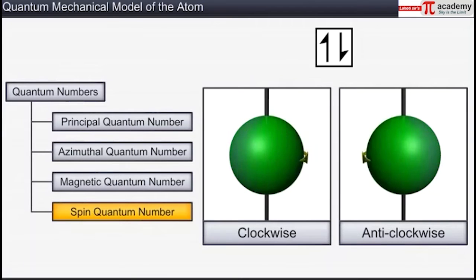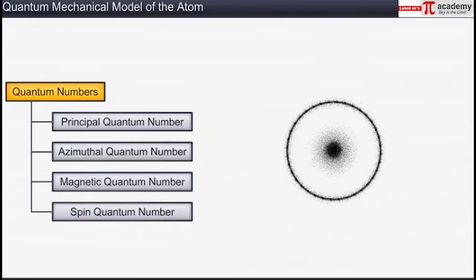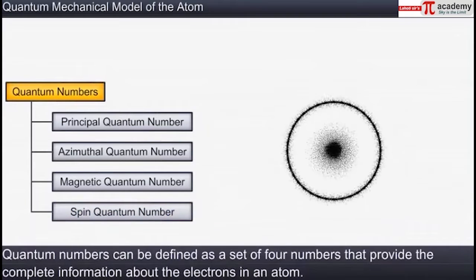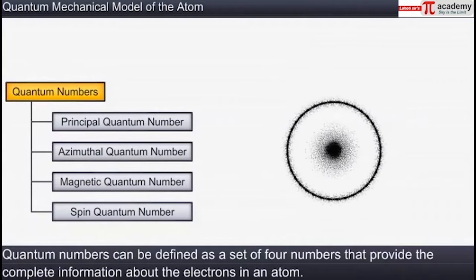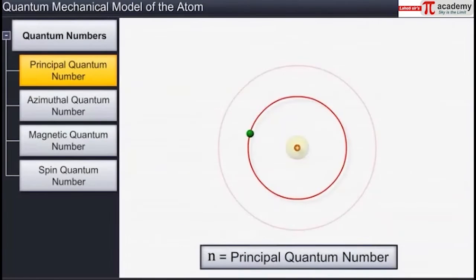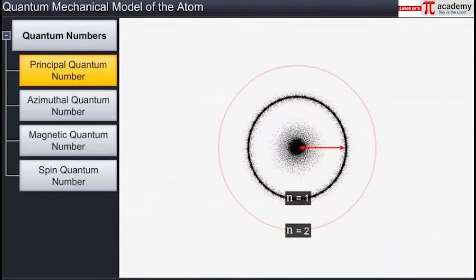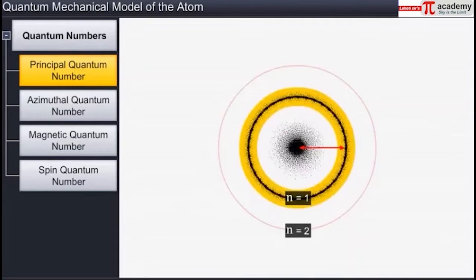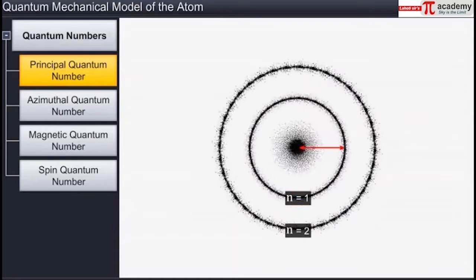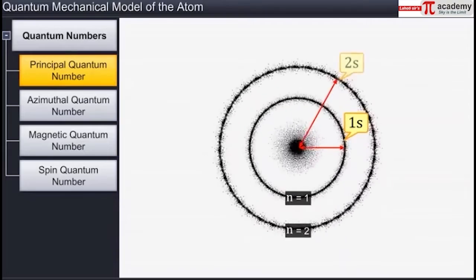Spin quantum number is characteristic for an electron. Therefore, quantum numbers can be defined as a set of four numbers that provide complete information about the electrons in an atom. The principal quantum number, denoted by the letter n, determines the size and, to a large extent, the energy of the orbital in which the electron resides. The size of an orbital increases with the increase in n. In other words, the larger the value of n, the greater is the distance of the electron from the nucleus.